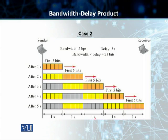In case number two, we have a bandwidth of five bits per second and a delay of five seconds. The bandwidth delay product gives us 25 bits. After five seconds, we have 25 bits on the link, which actually fully occupy the link — they fully fill the link after five seconds. So in each second there are five bits on the line, meaning the duration of each bit is 0.2 seconds.